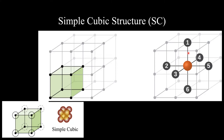So counting the neighbors: one item to the right, one upward, one on the other side, one attached to the third side, one on the backward side, and one downward — the sixth item. This means that in the simple cubic structure, any atom is attached to 6 nearest neighbors. This number is called the Coordination Number. So the Coordination Number for a simple cubic structure is 6.